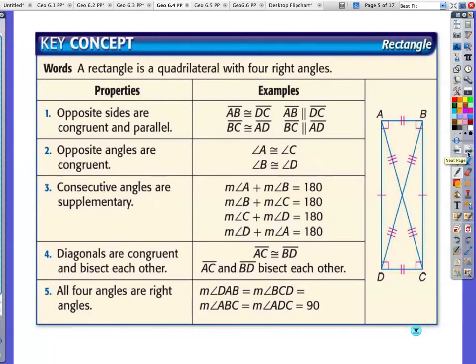All of these deal with opposite sides are congruent and parallel. That's a parallelogram. Opposite angles are congruent is a rule of a parallelogram. These still apply. Consecutive angles are supplementary. You don't have to write this down. Consecutive angles are supplementary. That's also a rule in a parallelogram.